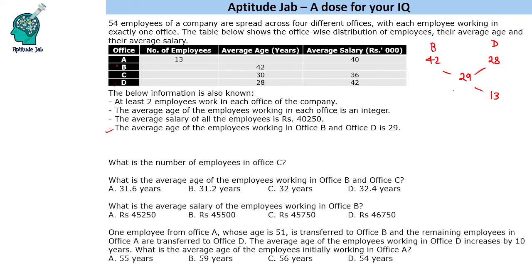So the ratio of employees in B to D is 13:1. Since at least two employees must work in each office, the ratio 1:13 is not valid. Taking 2 and 26, if we try 3 and 39 the total exceeds 54. So the only valid possibility is 2 employees in office B and 26 employees in office D.